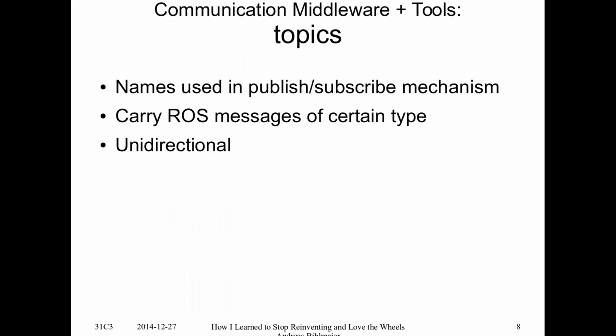Topics are the names under which information is published — they're built in a hierarchical structure, kind of like URLs in a file system. A topic is a unidirectional connection: you publish information and people subscribe to it. You do not get feedback on who subscribed; you just publish it and if there's at least someone interested, that node will get the information.